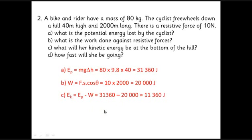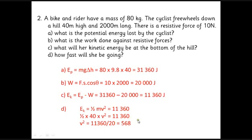Just like the last question, we then have to rearrange this to get half Mv squared equals 11,360. Just do the algebra on that. 40v squared is 11,360, so v squared is 284. Don't forget to take the square root. So you hit the end at 16.9 metres per second.